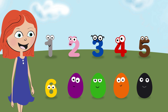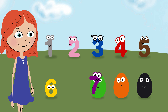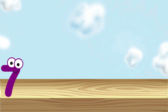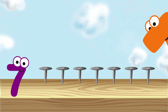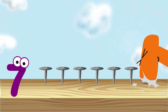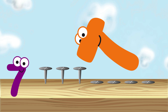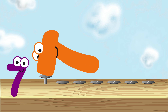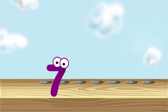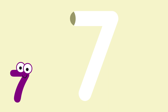What could be inside the purple egg? Seven. Peek-a-boo. Peek-a-boo. One. Two. Three. Four. Five. Six. And seven. Seven. We write number seven like this.